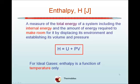Enthalpy, capital H, measured in joules, is a measure of the total energy of a system, including the internal energy and the amount of energy required to make room for the system by displacing its environment and establishing its volume and pressure. So capital H is equal to U, the internal energy, plus PV, where V is the volume of the system and P is the pressure of the system — that's the total energy required to displace the environment of equal volume V.